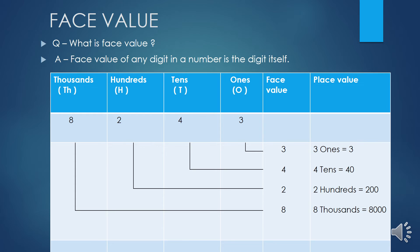According to face value — what is the face value? Face value of any digit in a number is the digit itself. Face value kisi bhi digit ki wo number hoti hai jo number hota hai wahi hoti hai. Jaise eight thousand two hundred forty three. Three ones place pe hai, to iski face value three hai. Aur place value three multiply one is equal to three.